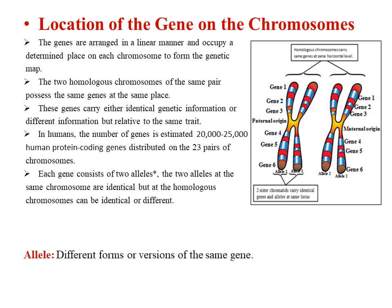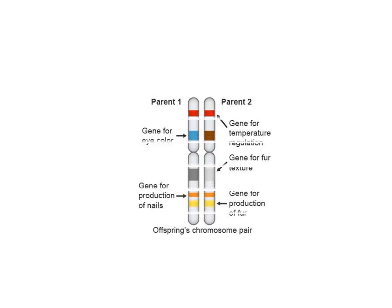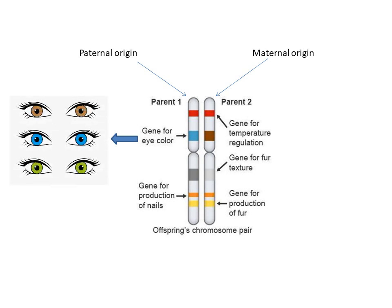Alleles are different forms or versions of the same gene. For example, looking at human chromosomes with different alleles: for the first gene they have the same allele, but for the second gene — the gene for eye color — one allele is blue and the other is brown, so they are different alleles. As we know, one chromosome is of paternal origin and the second is of maternal origin. The gene responsible for eye color is an example of this.